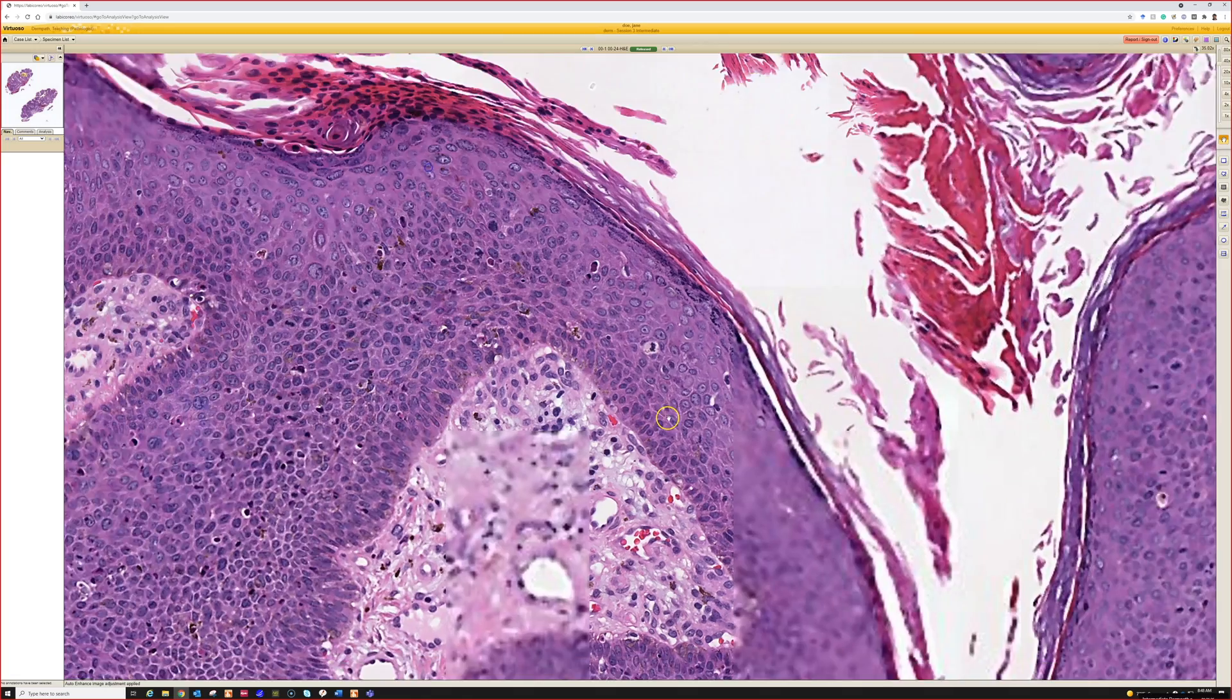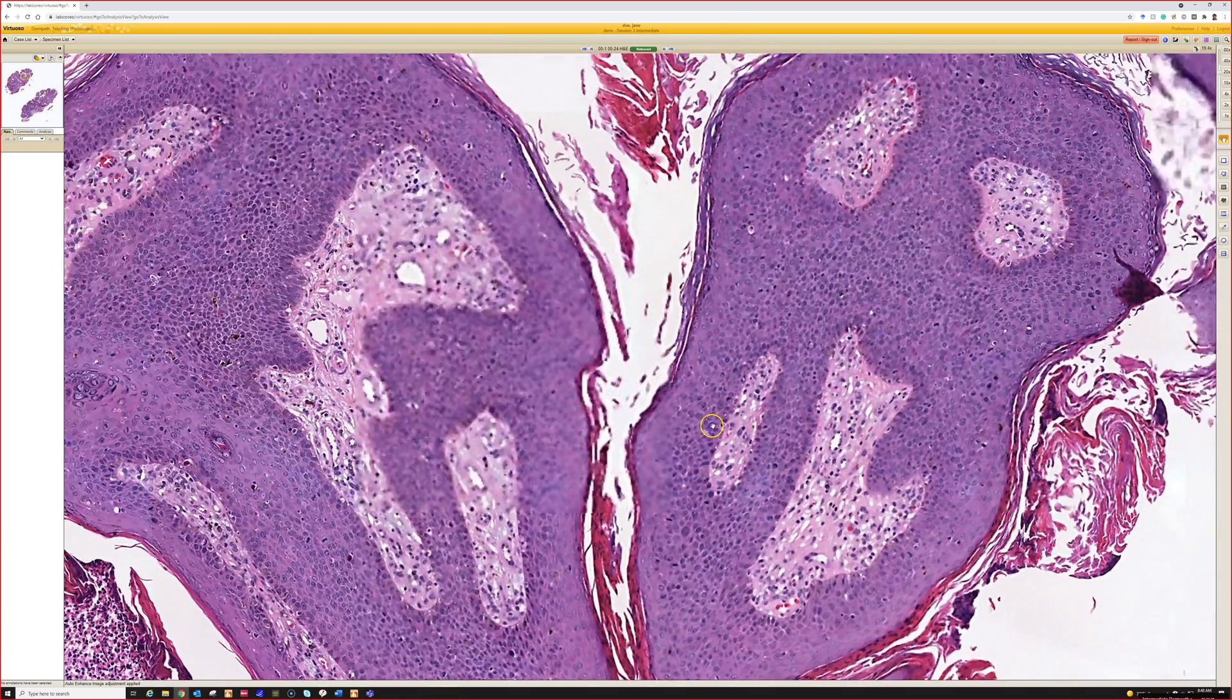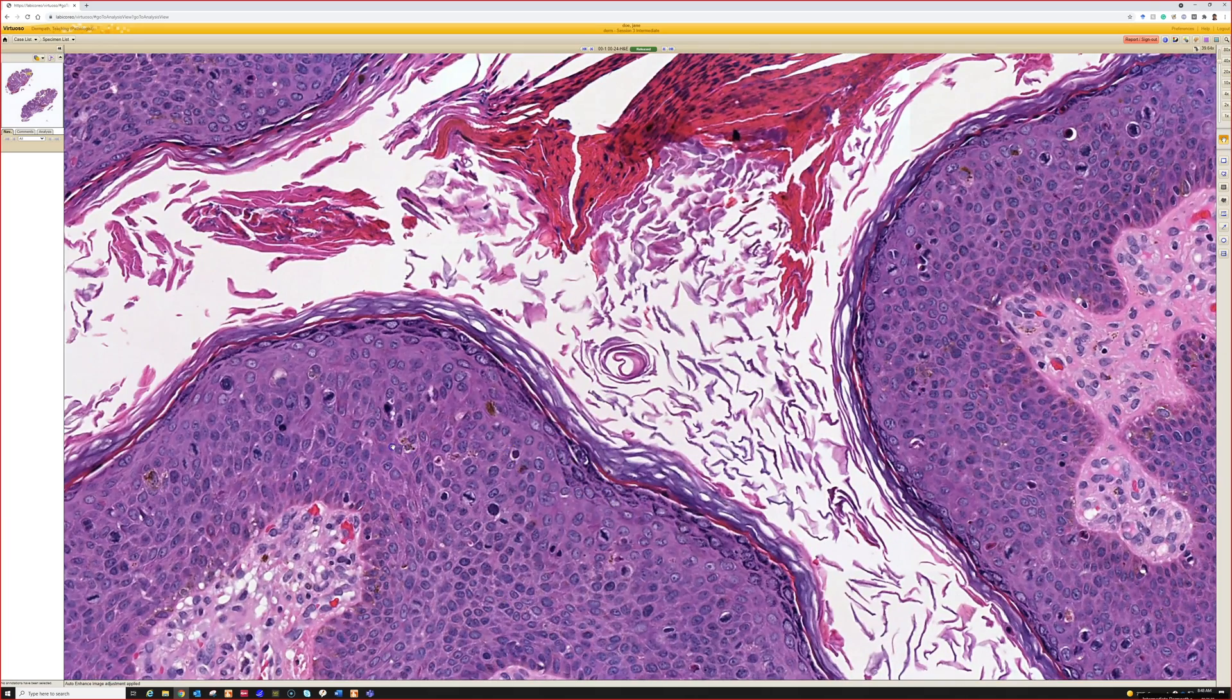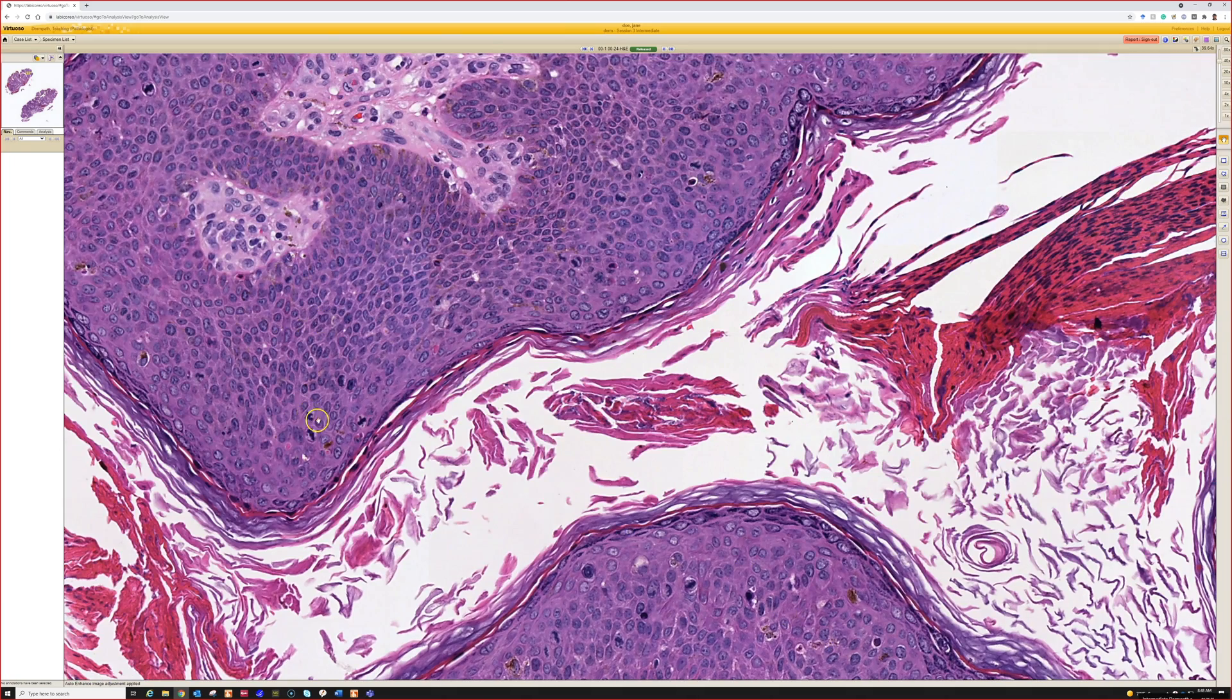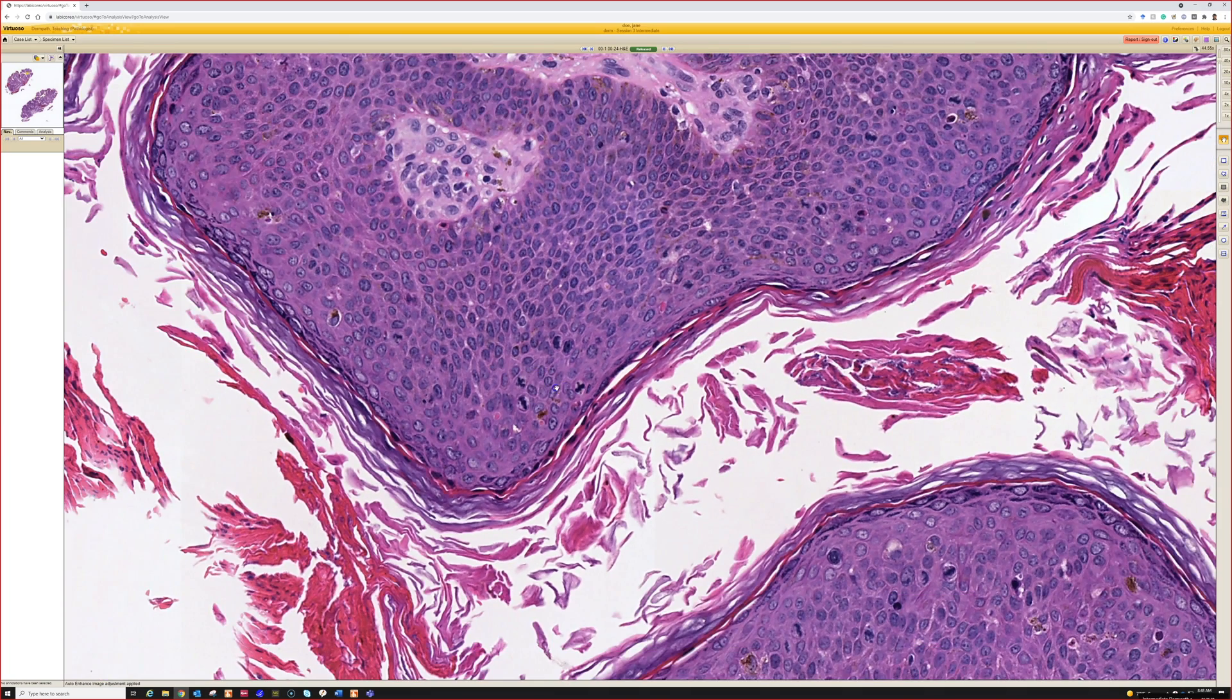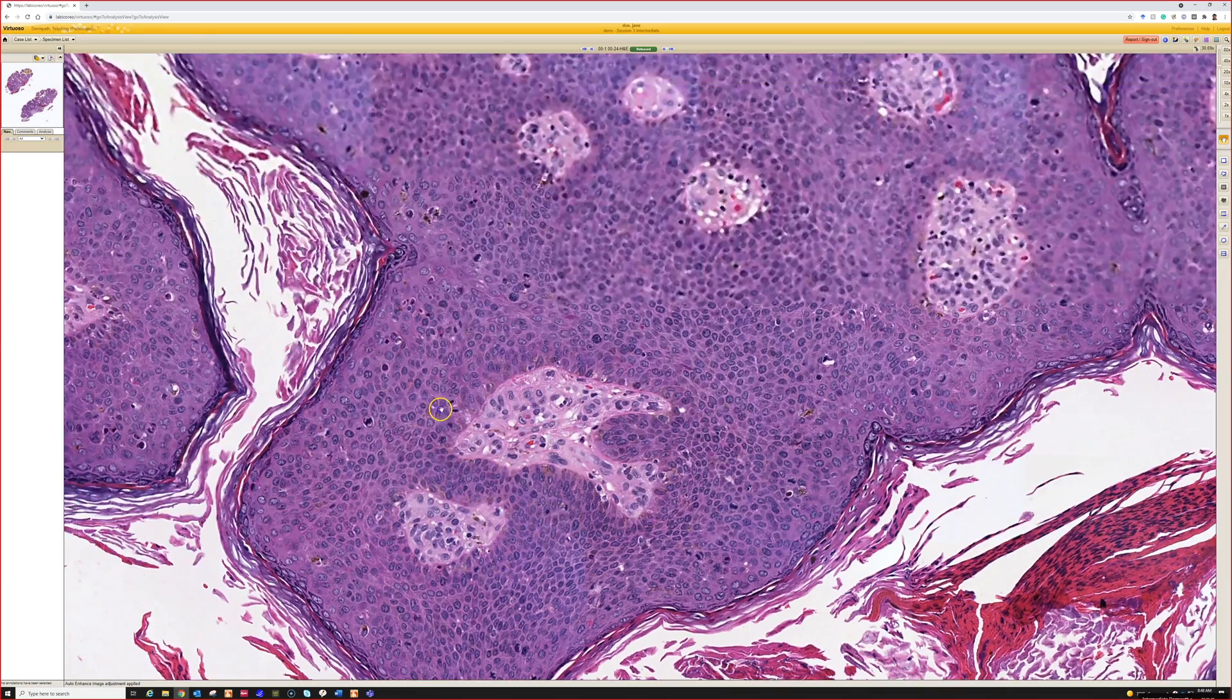And this is in the genitals, so this looks like a condyloma almost, but it's got full thickness atypia. It's got some areas that look like they might be coilocytes, and if you did a high-risk HPV—look, there's like X marks the spot—there's two or three X mitoses right here way up near the granular layer.